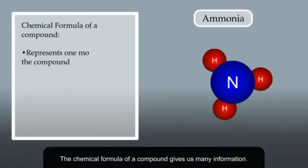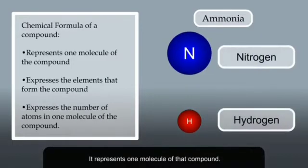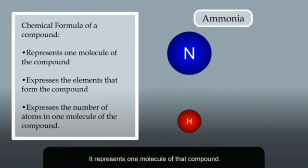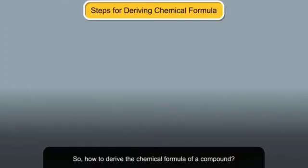The chemical formula of a compound gives us many information. It represents one molecule of that compound. It also specifies the atoms and their numbers in one molecule. So how to derive the chemical formula of a compound?